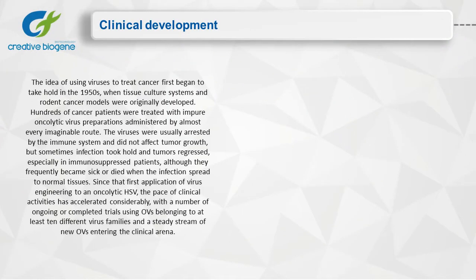The idea of using viruses to treat cancer first began to take hold in the 1950s, when tissue culture systems and rodent cancer models were originally developed. Hundreds of cancer patients were treated with impure oncolytic virus preparations administered by almost every imaginable route. The viruses were usually arrested by the immune system and did not affect tumor growth, but sometimes infection took hold and tumors regressed, especially in immunosuppressed patients, although they frequently became sick or died when the infection spread to normal tissues.